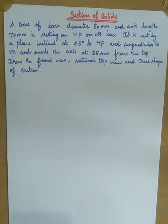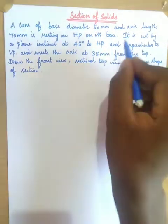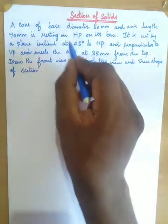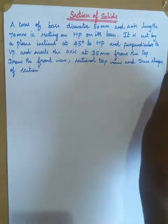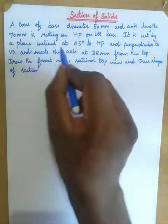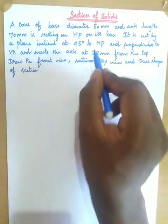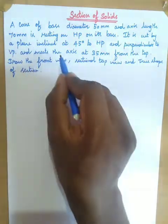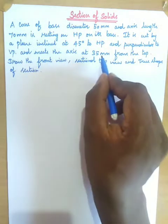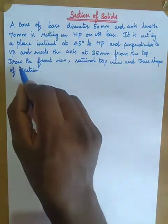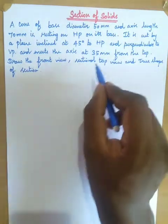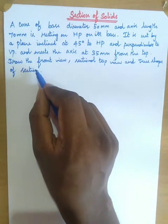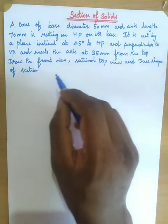So first read the question. A cone of base diameter 50 mm and axis length 70 mm is resting on HP on its base. It is cut by a plane inclined at 45 degrees to HP and perpendicular to VP, and meets the axis at 35 mm from the top. Draw the front view, sectional top view, and true shape of section.